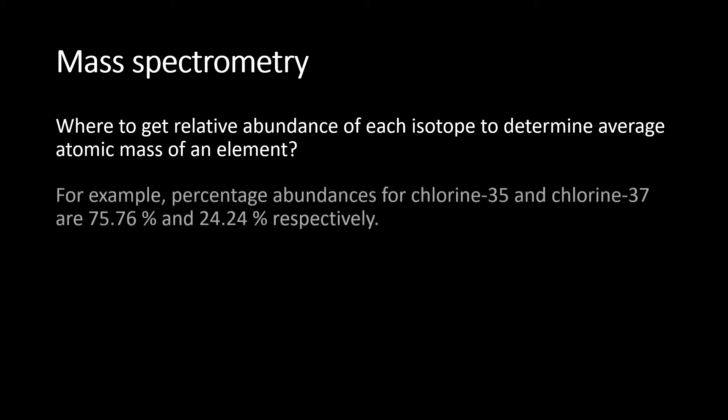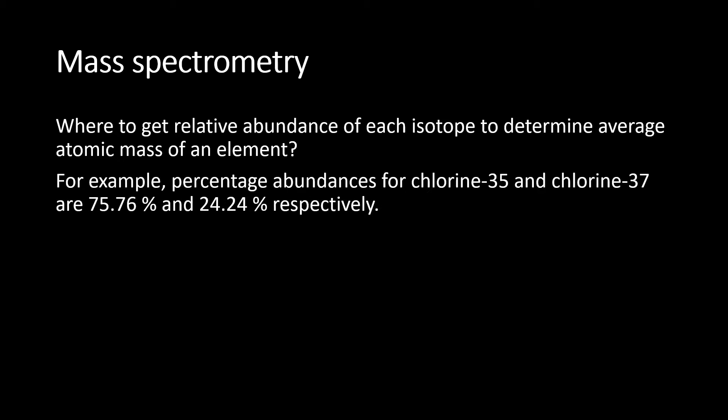For instance, how do we know that the percentage abundance of chlorine-35 and chlorine-37 are 75.76% and 24.24% respectively? So the answer is using mass spectrometry. Mass spectrometry is a technique for us to identify the component in a substance and also the relative abundance of each component in the substance.